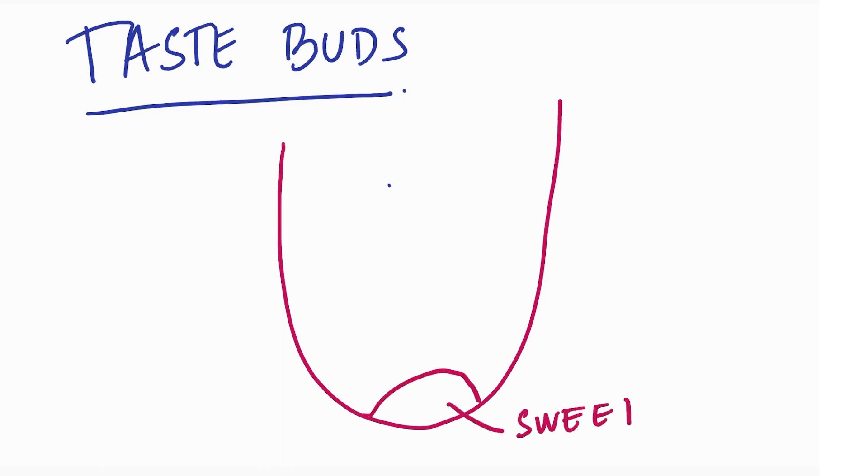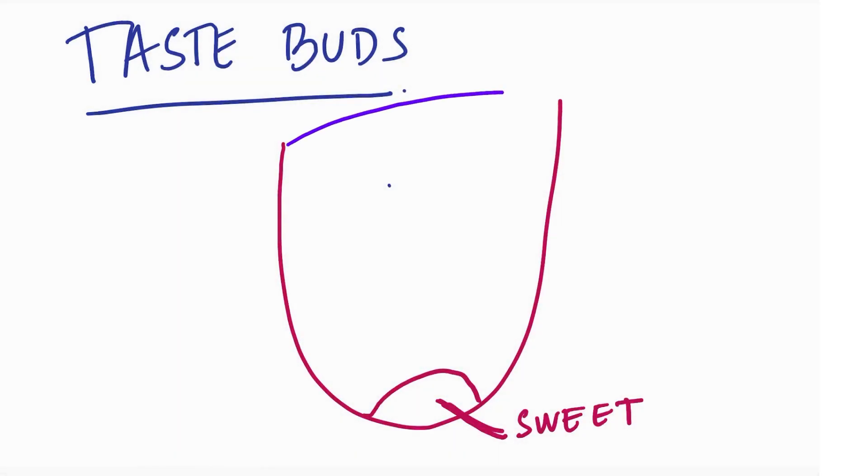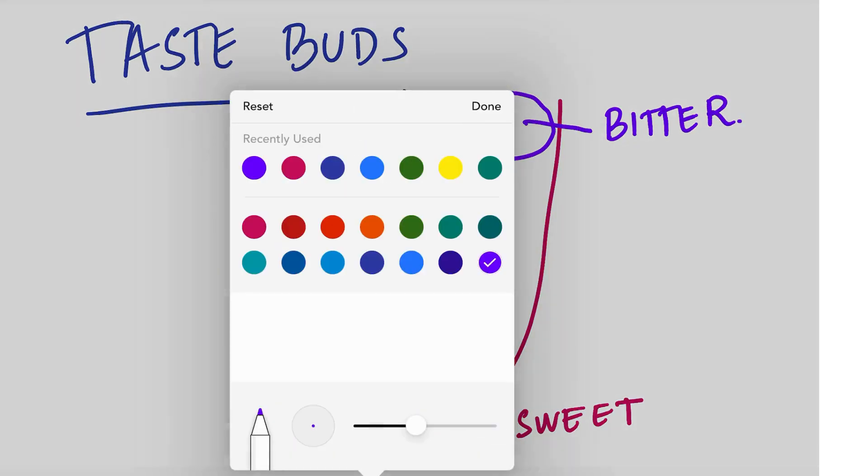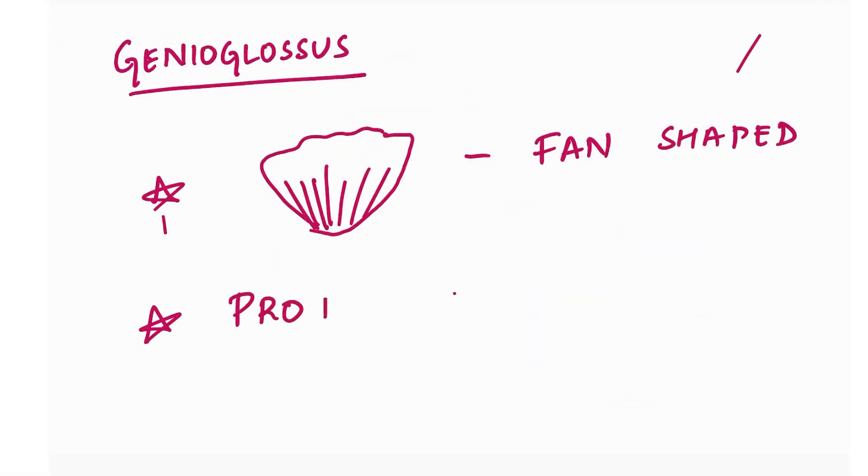Coming to taste buds: we have sweet taste buds at the tip, followed by bitter taste buds in the posterior side. On the sides we have sour, like biting on a lemon. Towards the middle of sour and sweet, sometimes coinciding with sour and sweet, we have salty.